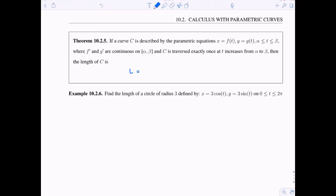then c is traversed exactly once as t increases from alpha to beta, then the length of the curve is given by L equals an integral from alpha to beta, and of course this is given by this interval up here, and we have the square root of dx dt, the derivative of x with respect to t, quantity squared, plus dy dt, quantity squared, again all under the square root dt.